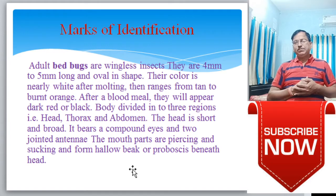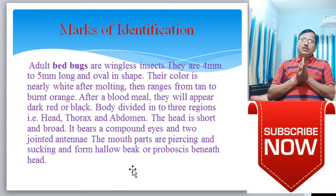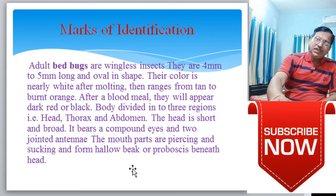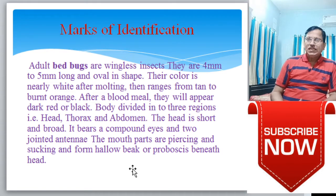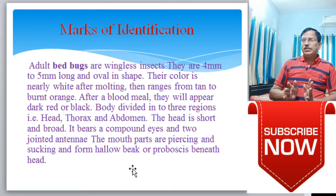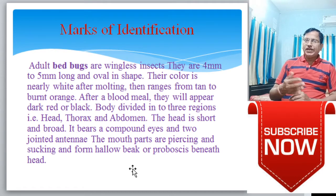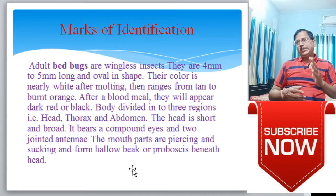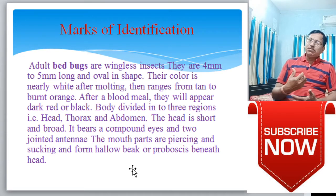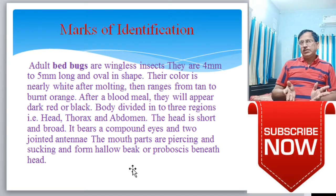To identify the bed bug, we have specific points of identification. Adult bed bugs are wingless insects. They are 4 mm to 5 mm long and oval in shape. Their color is nearly white after molting, then ranges from tan to burnt orange after a blood meal; they will appear dark red or black.